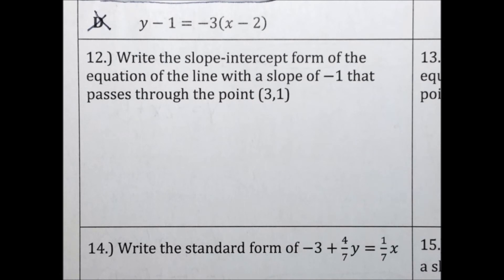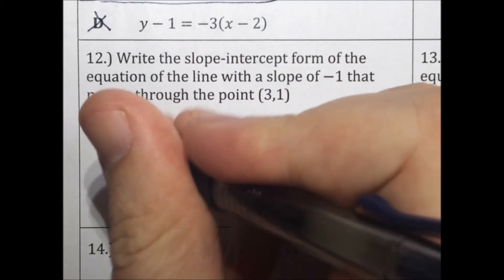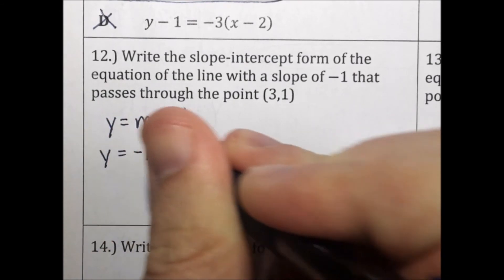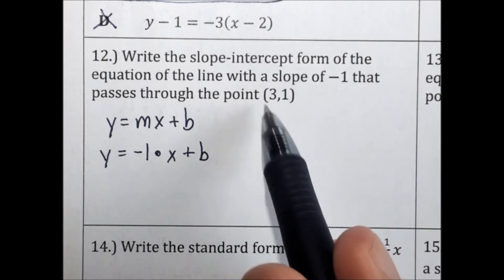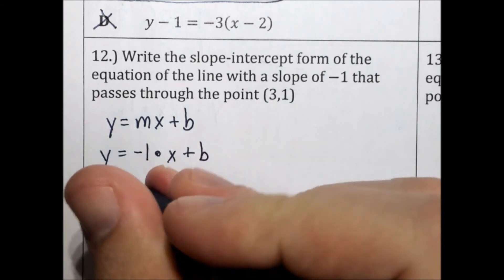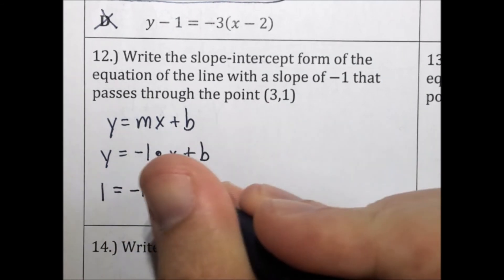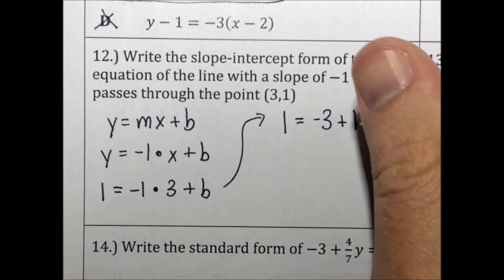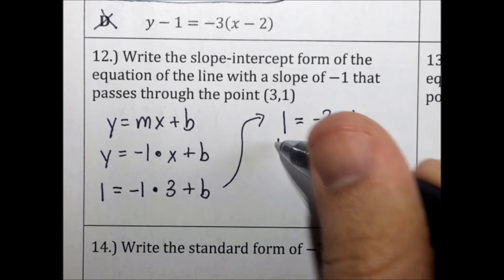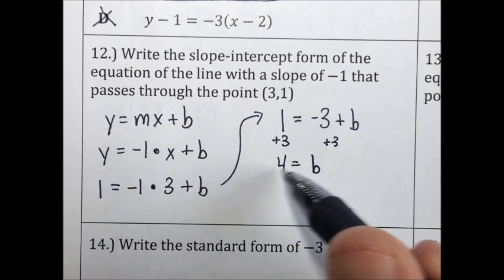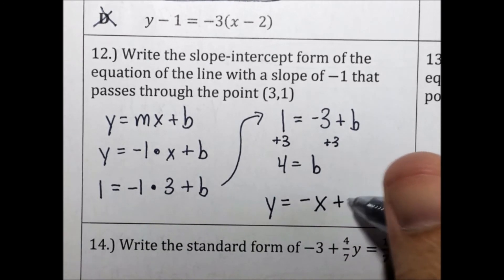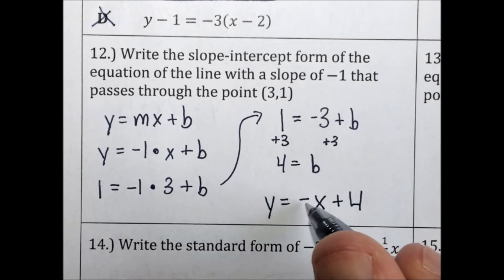Write the slope-intercept form of the equation of the line with a slope of negative 1 that passes through the point 3, 1. Slope-intercept form is y equals mx plus b. The slope is negative 1. We don't know the y-intercept, but we have a point, so plug in: 1 equals negative 1 times 3 plus b, giving 1 equals negative 3 plus b. Adding 3 to both sides: b equals 4. Our equation is y equals negative x plus 4.